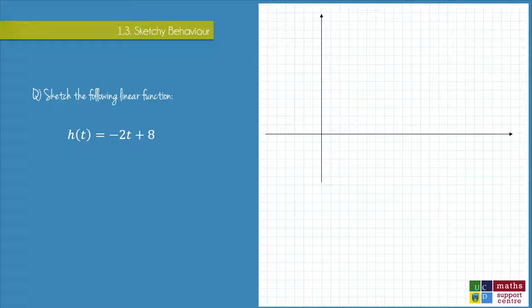The first thing I'll do is label these axes. The input axis is t, as t is our input variable, and our output axis is h(t).